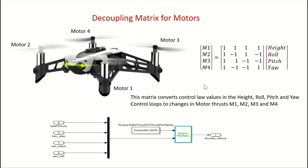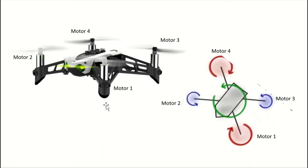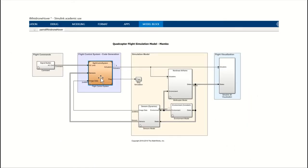The four motors connect to a decoupling matrix that controls height, roll, pitch, and yaw. For yaw: motors 1 and 4 go positive, motors 2 and 3 go negative. This is because motors 1 and 4 rotate clockwise while 2 and 3 rotate anticlockwise — speeding up one pair and slowing the other creates a net yaw torque.